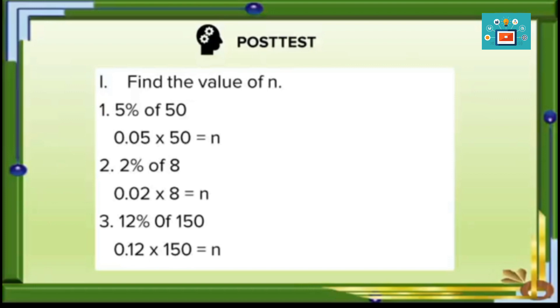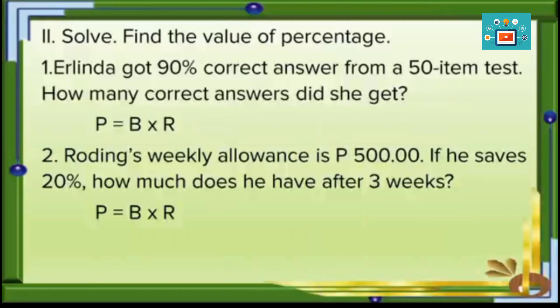Let's now proceed to our post-test. Find the value of n. Number 1: 5% of 50 — change the percent to decimal to compute the percentage. Number 2: 2% of 8 — 2% becomes 0.02 times 8. Number 3: 12% of 150 — 12% becomes 0.12. Test 2 — solve: Number 1: Erlinda got 90% correct answers from a 50-item test. How many correct answers did she get? Number 2: Rodin's weekly allowance is 500 pesos. If he saves 20%, how much does he have after 3 weeks?